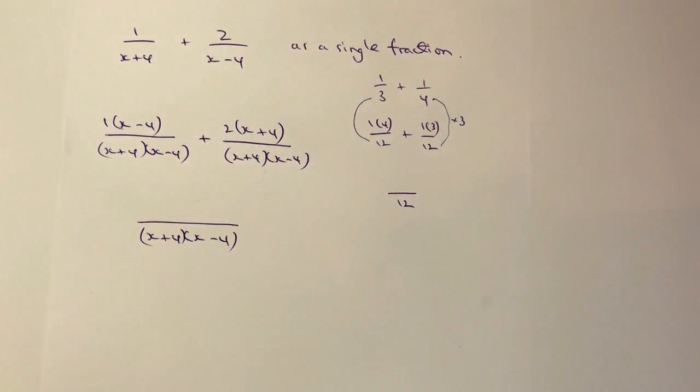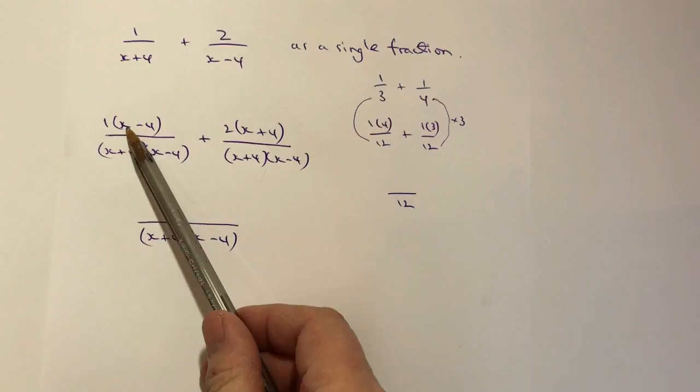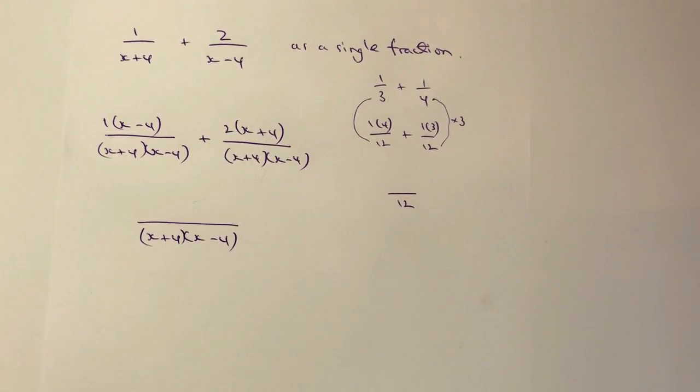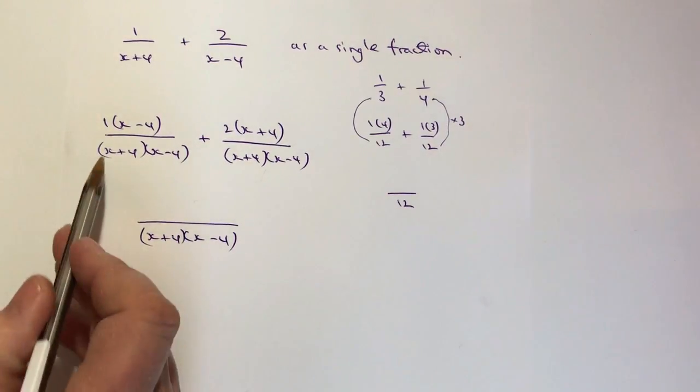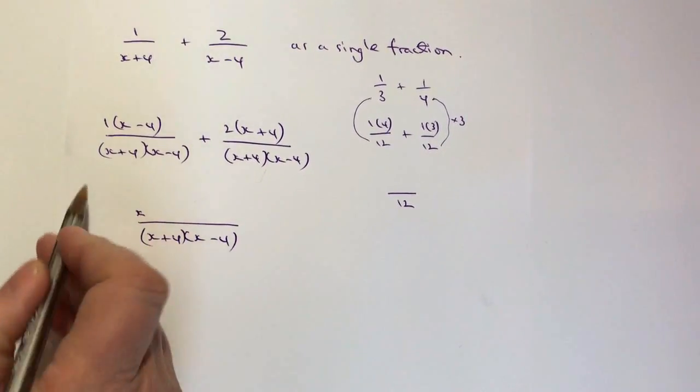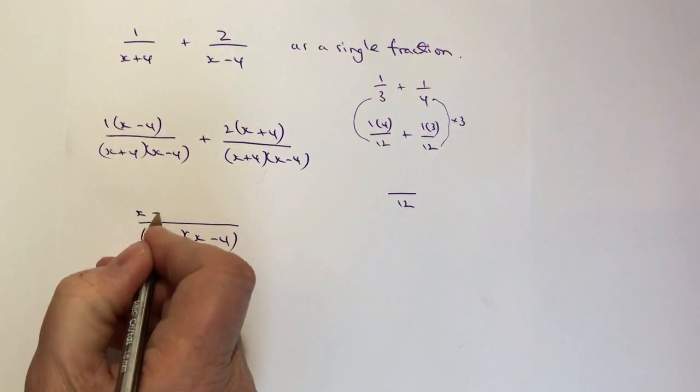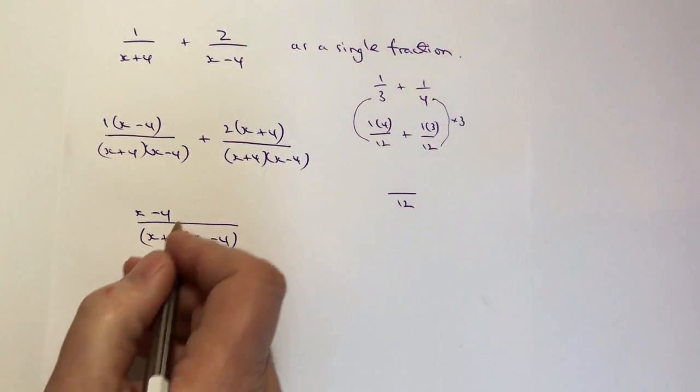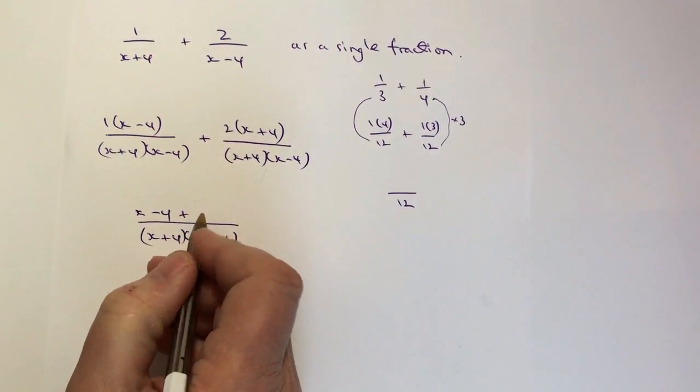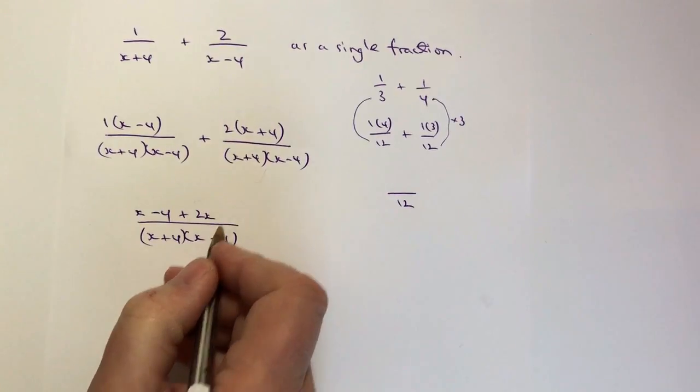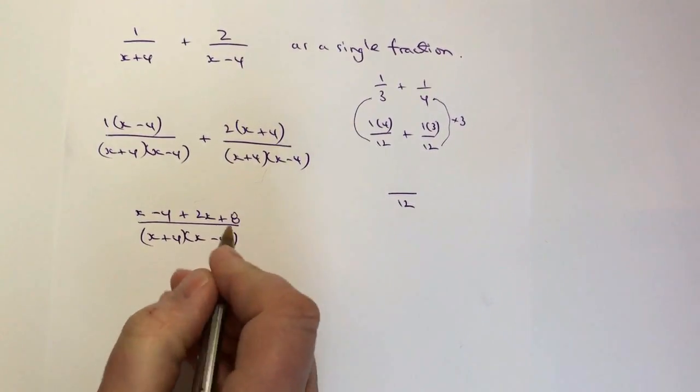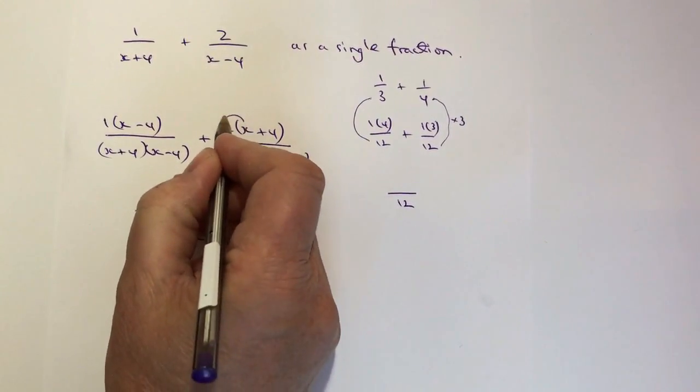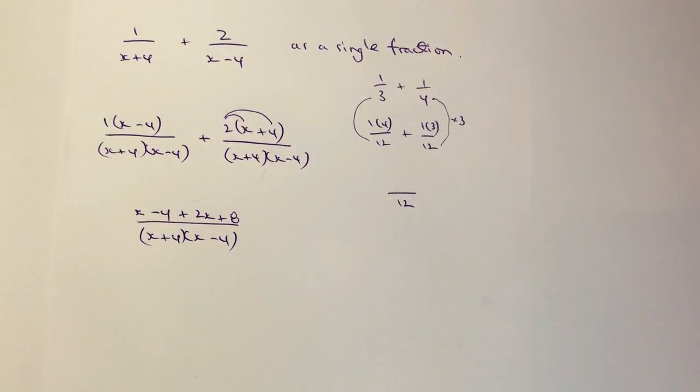Okay and then it's a case of multiplying out the brackets for each of these terms and then gathering up the like terms together. So the first thing is I've got 1 times x well that's going to be x and 1 times minus 4 is x minus 4. With the second fraction I've got plus 2 times x is 2x and 2 times 4 is going to be plus 8 and all I've done there is I've multiplied that by that and that by that. If you're not sure about this please do have a look at some of the other videos.